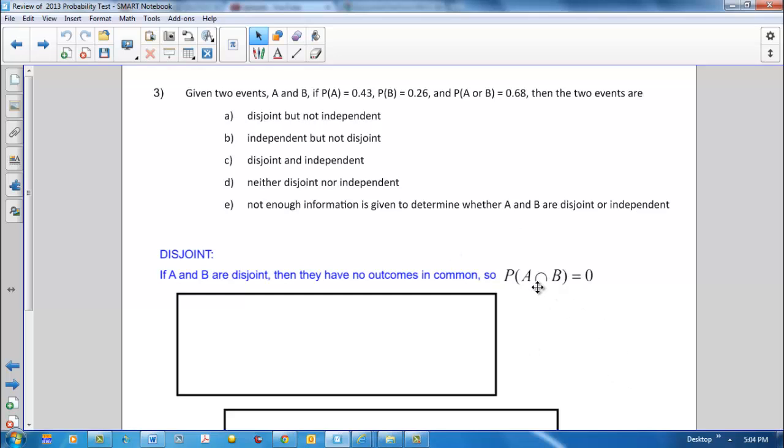So we can find out what the probability of A and B is to see if it's 0 or different from 0. Let's see what we're given. We're given the probability of A or B, the probability of B, and the probability of A. So if we go to our formula sheet,